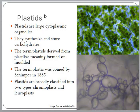Plastids are large cytoplasmic organelles. As you see in the images, rounded membrane structures present within the cells are called plastids. They synthesize and store carbohydrates. The word 'plastid' is derived from a word called 'plastikos', meaning molded. The term plastid was coined by a scientist called Shimba in 1885.